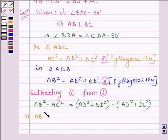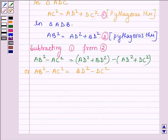Or, we further have AB square minus AC square is equal to BD square minus DC square. Or, we have AB square plus DC square is equal to AC square plus BD square.